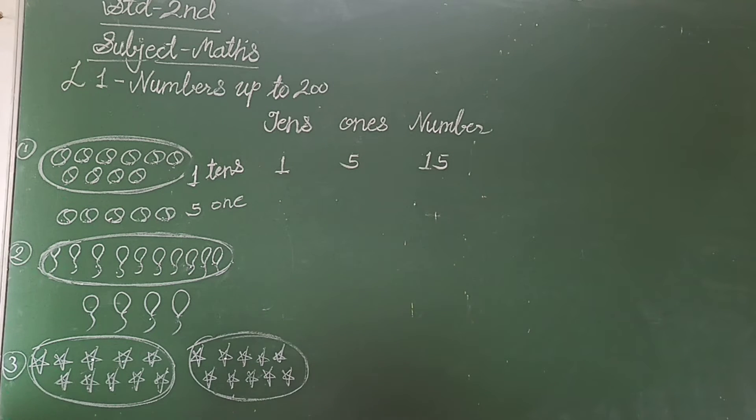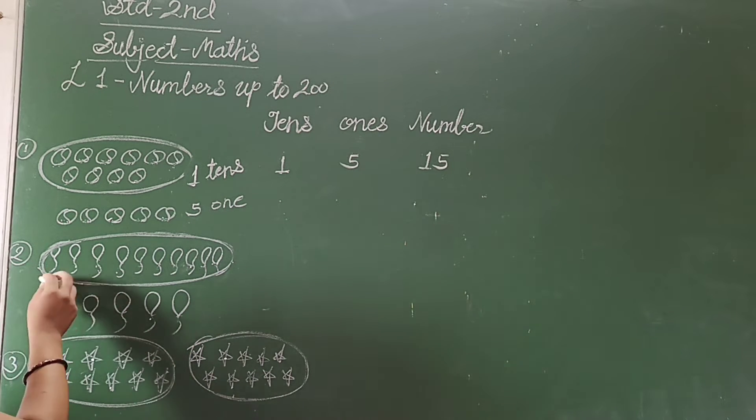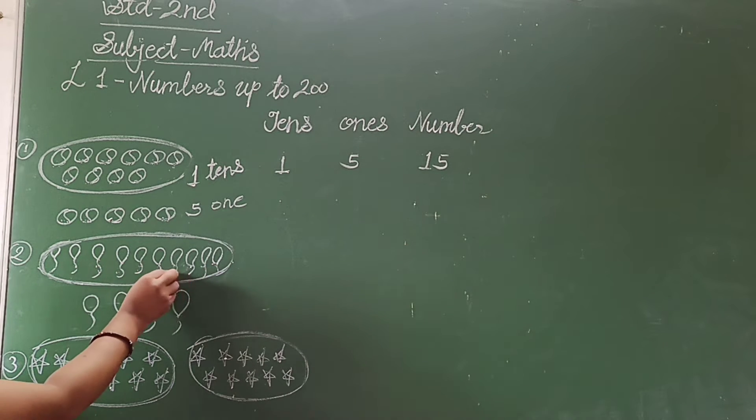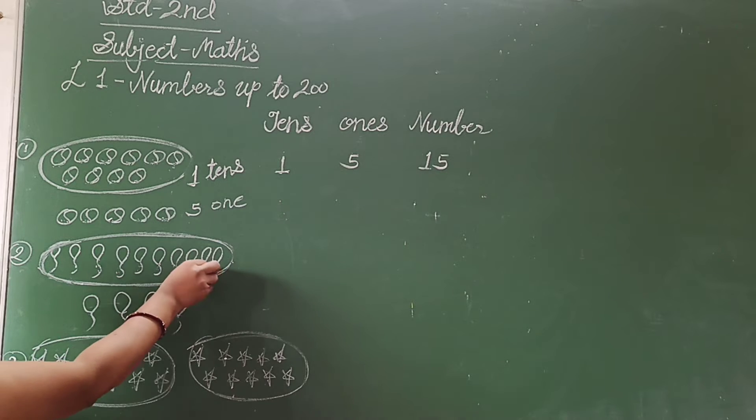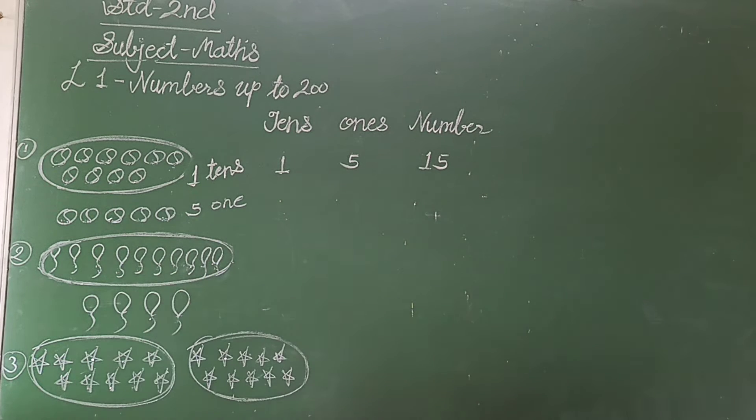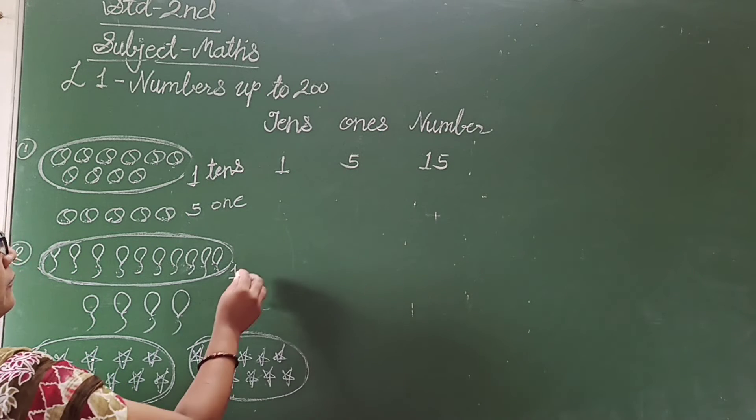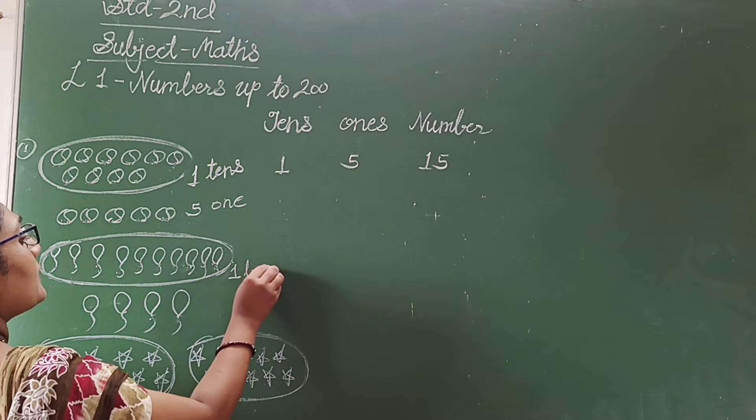Next example. Here I have 10 balls. Count it 1, 2, 3, 4, 5, 6, 7, 8, 9, 10. That means I have 1 bundle of 10 balls. Means 1 10s.